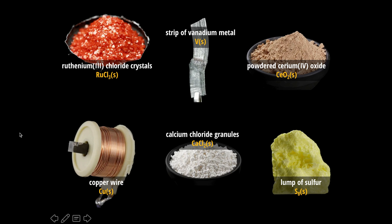Sometimes it is useful to pay attention to the descriptors used in phrases to determine whether something is in the solid, liquid, or gaseous state. When you see the words crystals, a strip of, powdered, a lump of, granules, or copper wire, these are indicators or descriptors that tell us the substance is in the solid state.